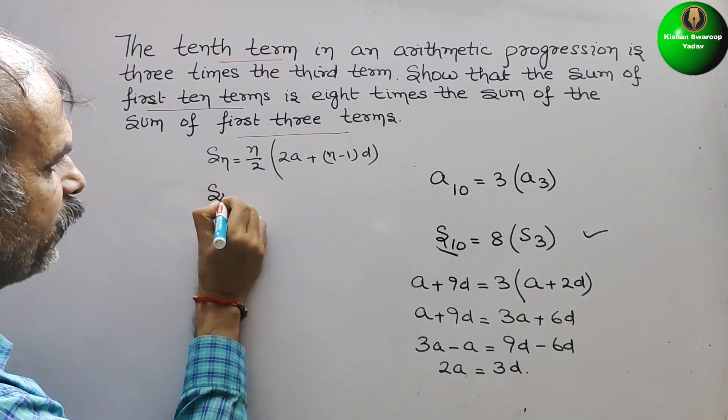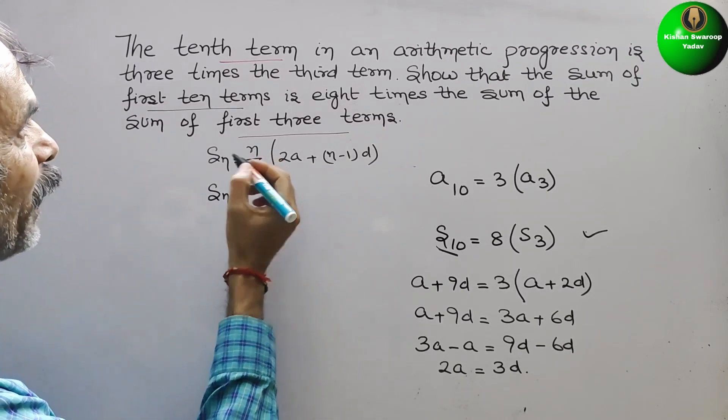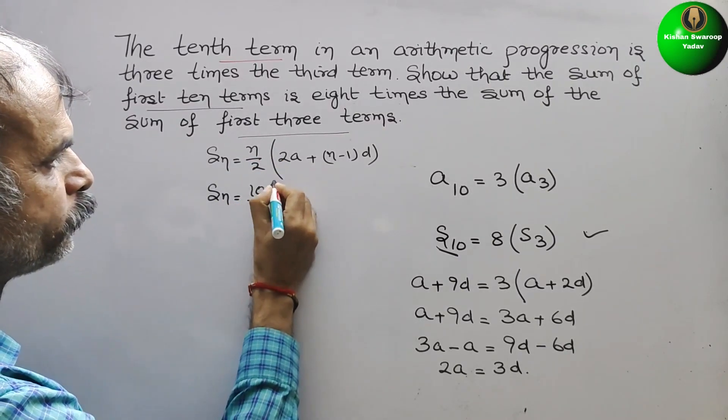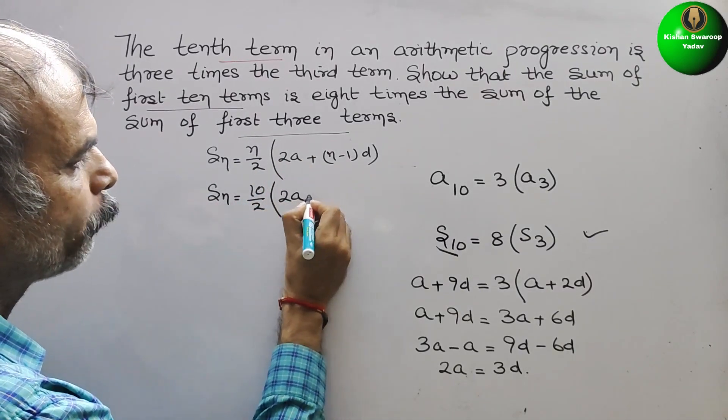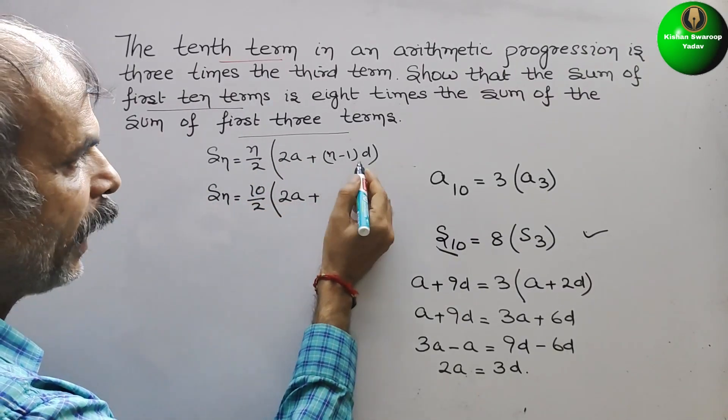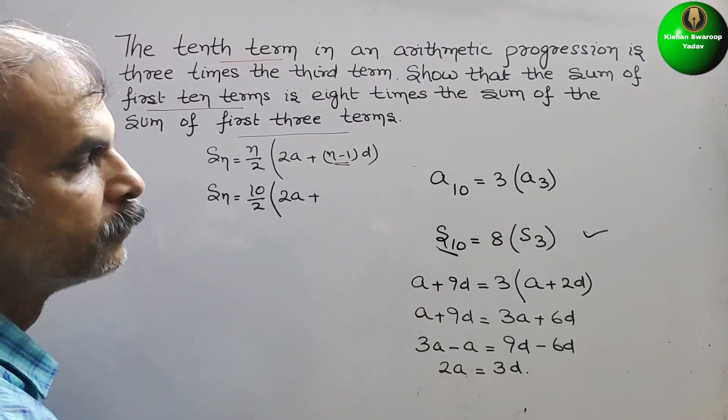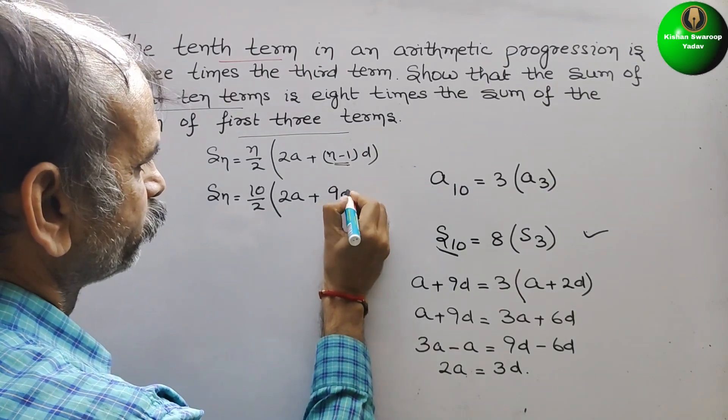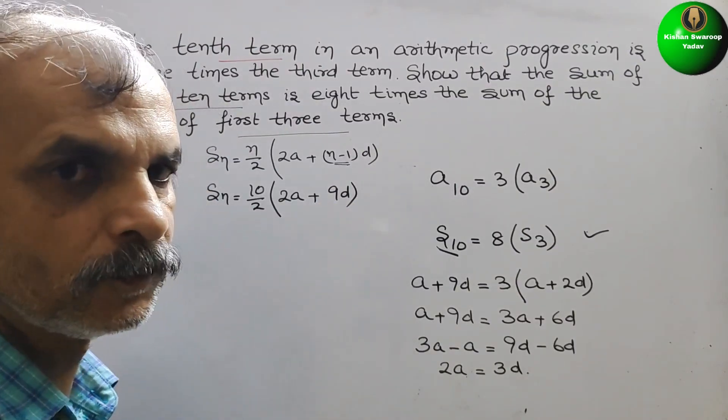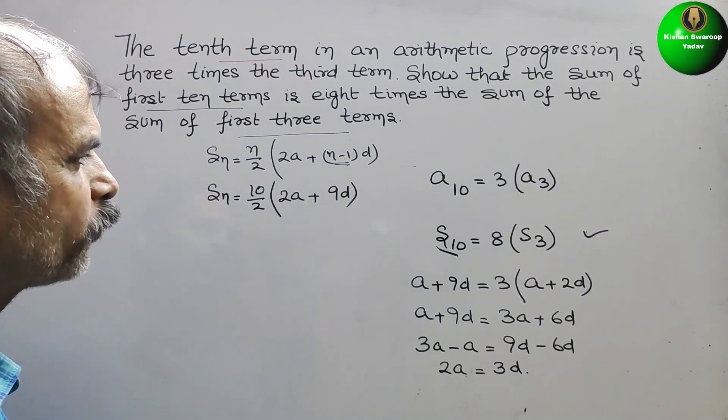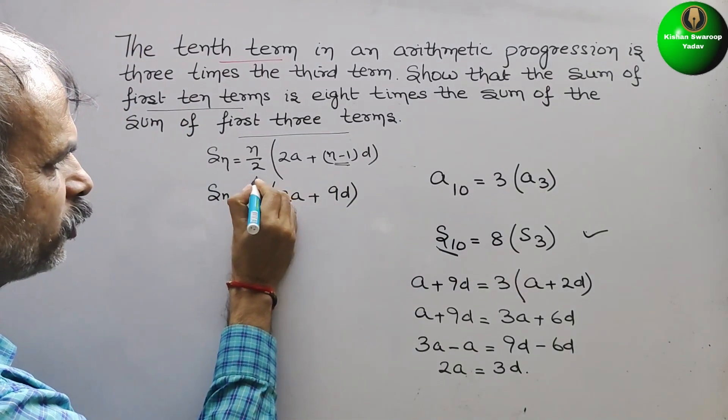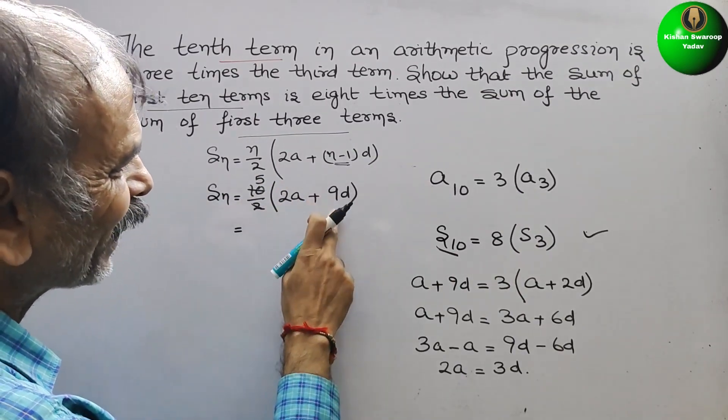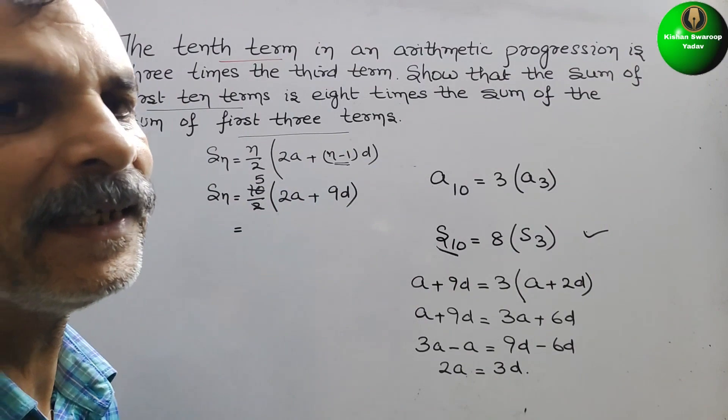See this. Sn is equal to n by 2, that means 10 by 2. Here they have given 2A plus n is what? 10 minus 1 is 9D. Now, so here what we have to do? Just we have to cut this. This is your 5. So now here 2A is there and 9D is there.